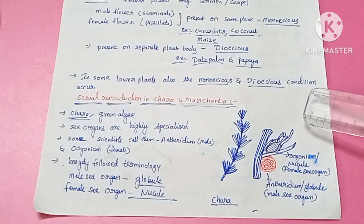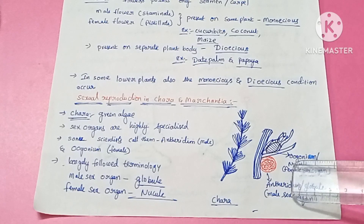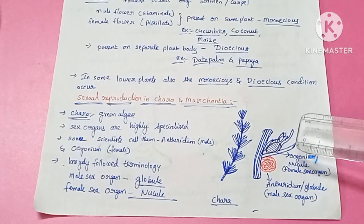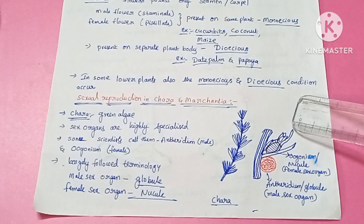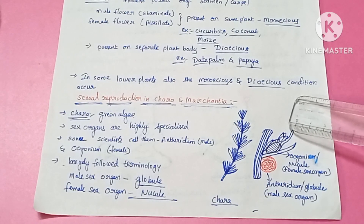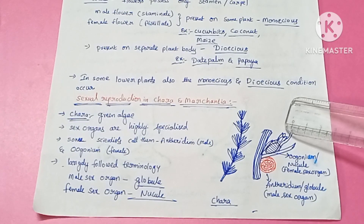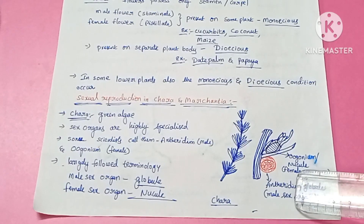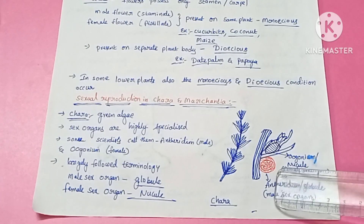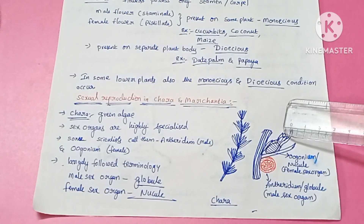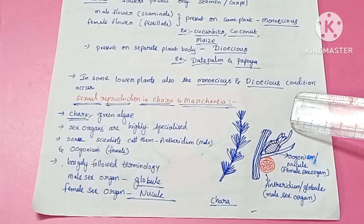In Chara, most species show the monoecious condition — male and female sex organs are present on the same plant. Every antheridiun produces band-shaped, spirally coiled, biflagellated antherozoids. In the nucule, there is only a single egg, which is laden with starch and oil globules. That is the summary about Chara.